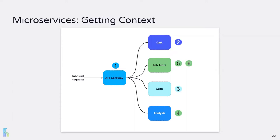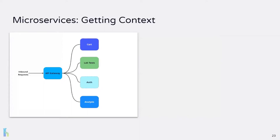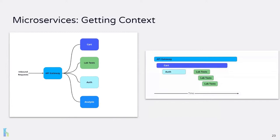Amy and other senior engineers have built up enough knowledge to narrow down where the issue is, but even this is becoming more difficult as they continue to add services. They want a solution that will let everyone get the context they need quickly. Distributed tracing shows the high-level overview of the execution path of a request. While the architecture diagram shows the layout and connections of the system, the trace diagram shows how an individual request actually flowed through the system. We can see the API Gateway calls the cart and then the auth service, and then three calls to the lab test service — showing how long everything took and the relationship between all spans.